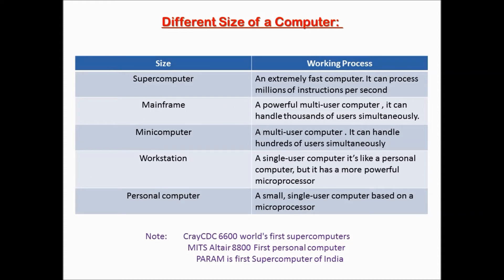Different sizes of a computer. Supercomputer: an extremely fast computer; it can process millions of instructions per second. Mainframe: a powerful multi-user computer; it can handle thousands of users simultaneously. Mini computer: a multi-user computer; it can handle hundreds of users simultaneously. Workstation: a single-user computer like a personal computer, but with a more powerful microprocessor. Personal computer: a small, single-user computer based on a microprocessor.